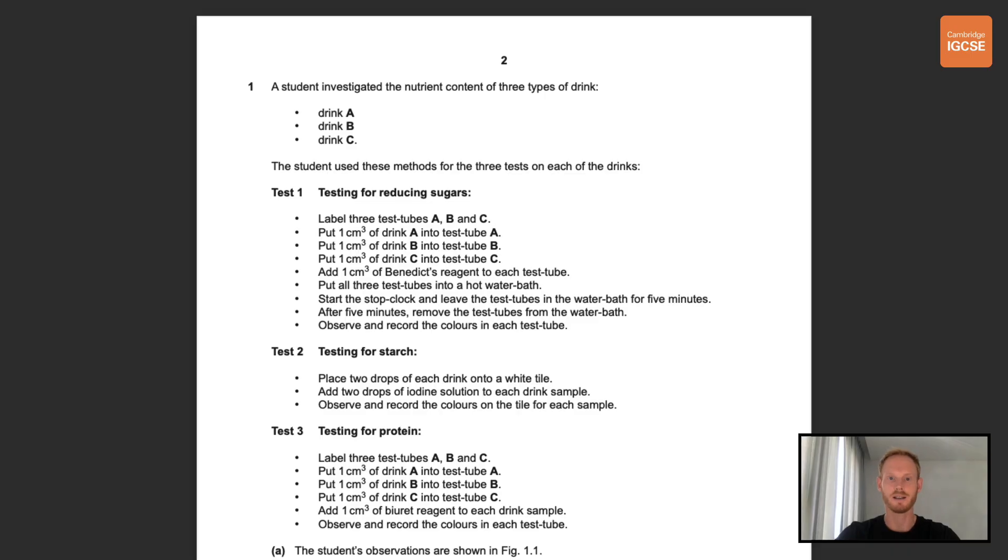Alright question number one. A student investigated the nutrient content of three types of drink: drink A, drink B and drink C. The student used these methods for the three tests on each of the three drinks. So the first is a test for reducing sugars, the Benedict's test, the second a test for starch involving iodine solution and the third the Bioret test for proteins. Now each of these tests as well as two others are covered in my video on topic 4.1 biological molecules. The tests come up frequently in papers 5 and 6. Now you could pause the video and carefully study the methods if you like but I'm going to move on because there's not a huge amount of information here that's actually necessary for the upcoming questions.